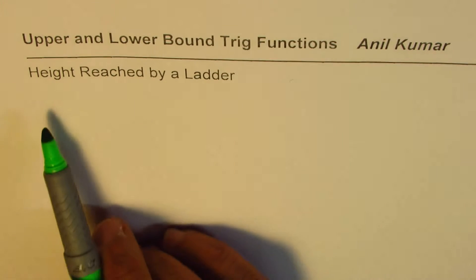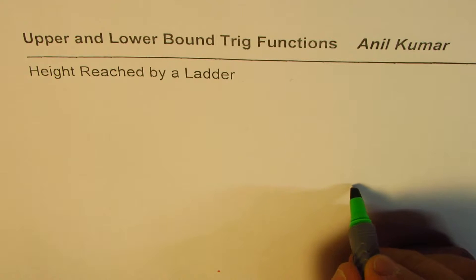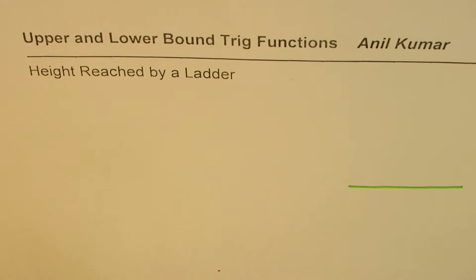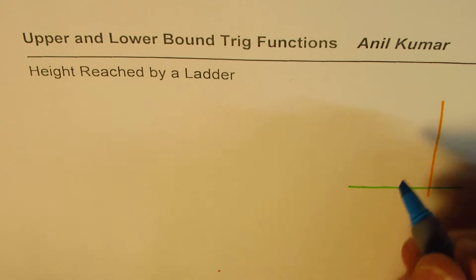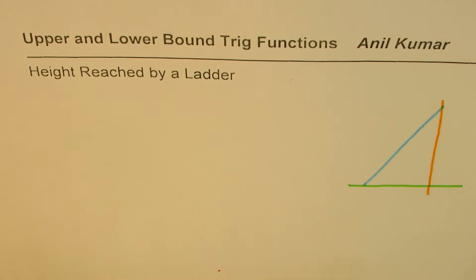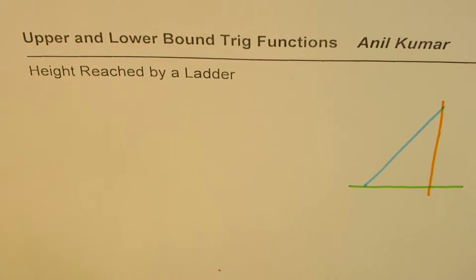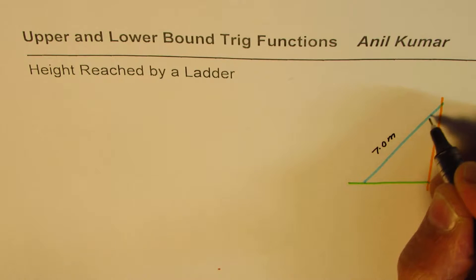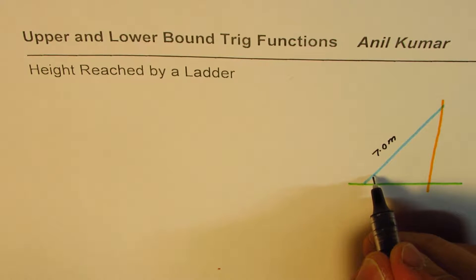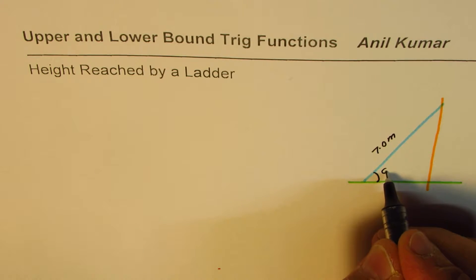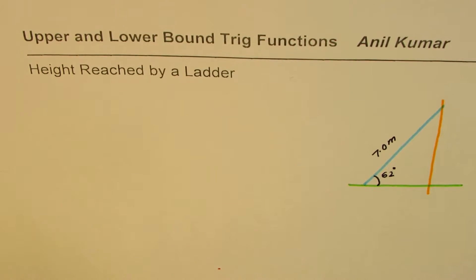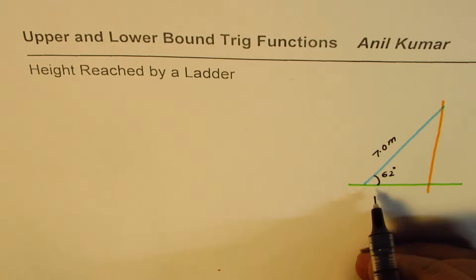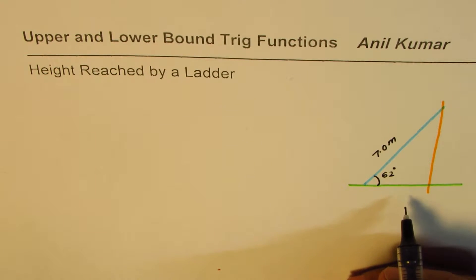In this video we'll see the height reached by a ladder. Let me give you a diagram first. We have the ground, a wall on the right-hand side, and a ladder which is about 7.0 meters long. It makes an angle of 62 degrees with the ground.